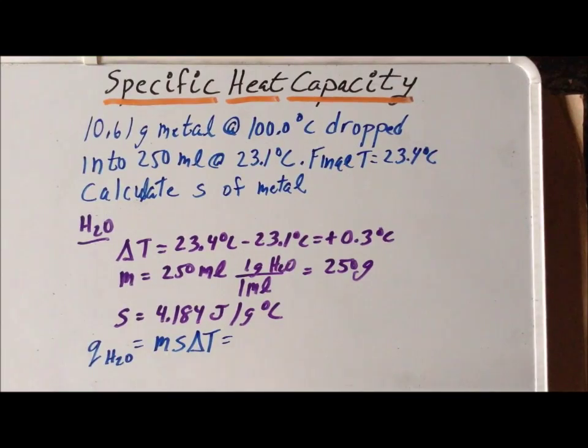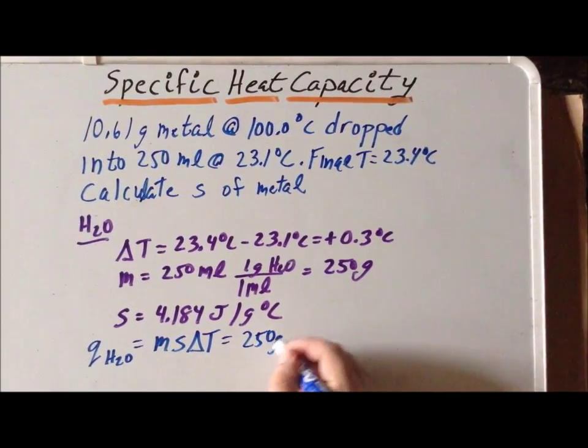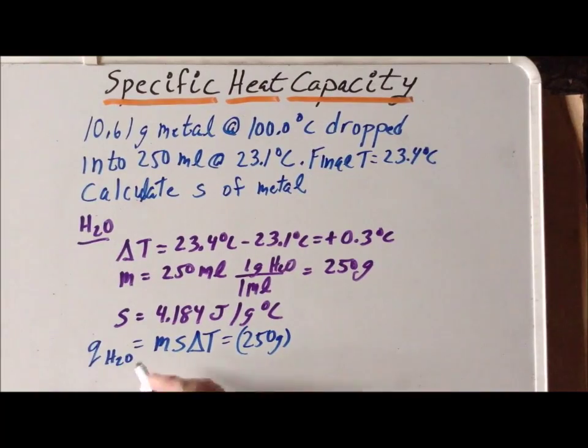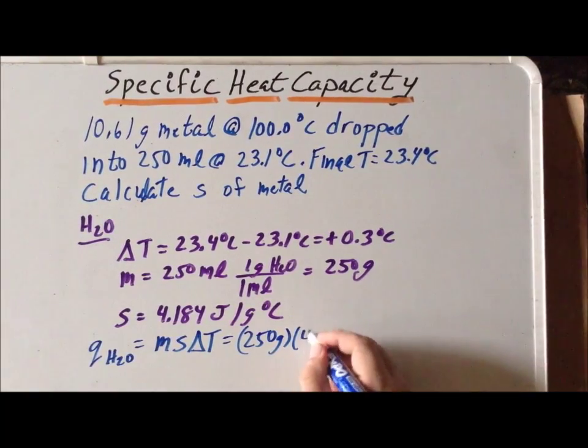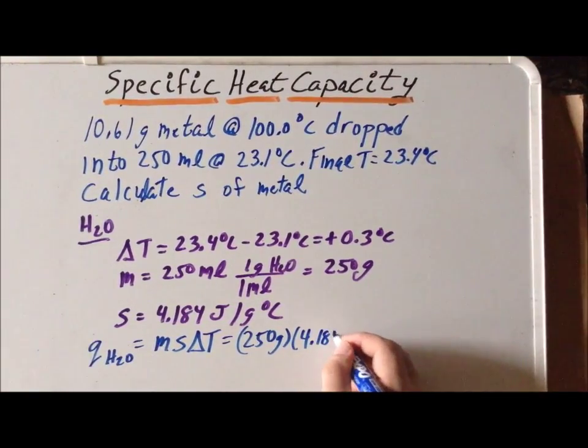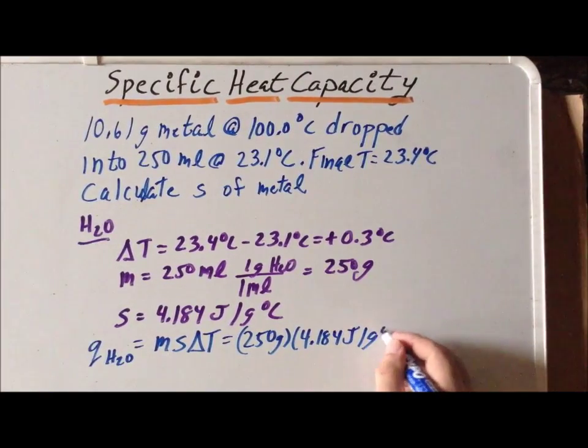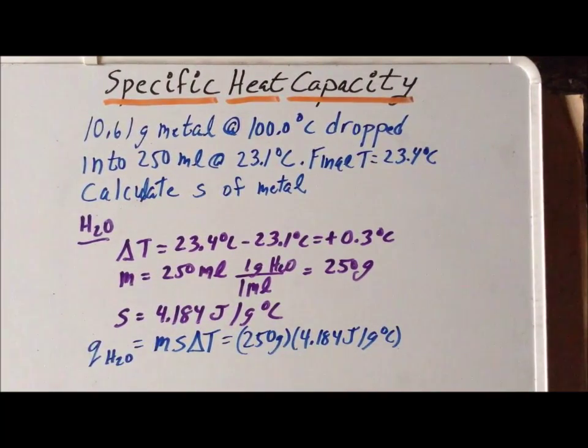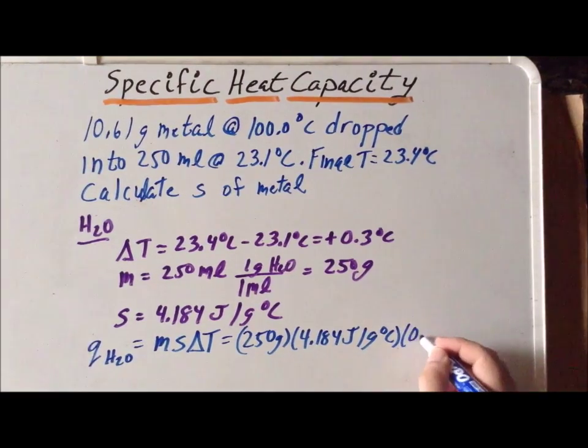We have our 250 grams of water. We have our specific heat capacity S, which is 4.184 joules per gram degree centigrade. And our change in temperature is 0.3 degrees centigrade.